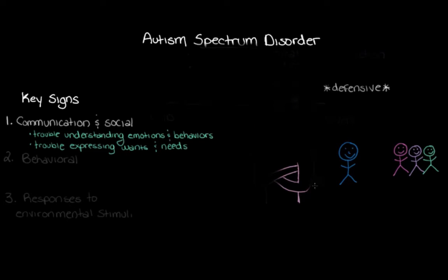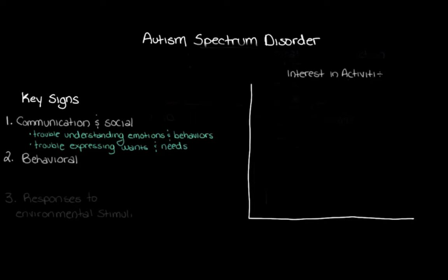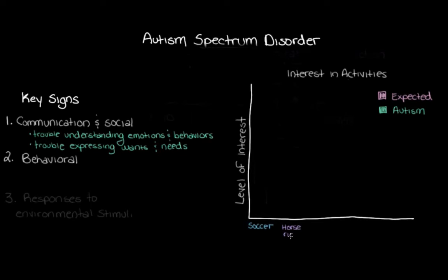Moving to behavioral signs of Autism Spectrum Disorder — let's make a graph showing different levels of interest in activities. Our y-axis will be level of interest. We'll use pink to draw what we might expect for a typical kid, and green for what we might see for a kid with Autism Spectrum Disorder. On the x-axis we'll put different activities: soccer, horseback riding, interest in cars, and playing with blocks.